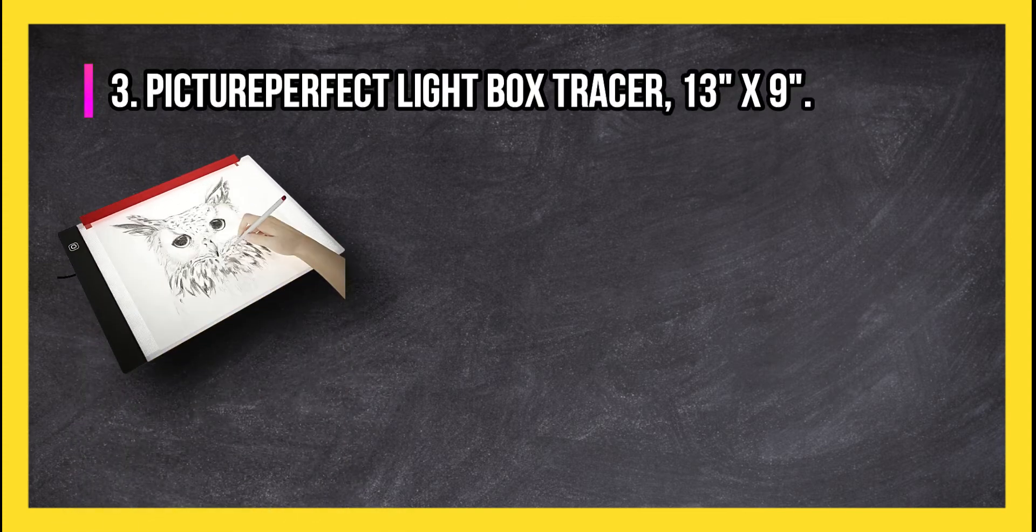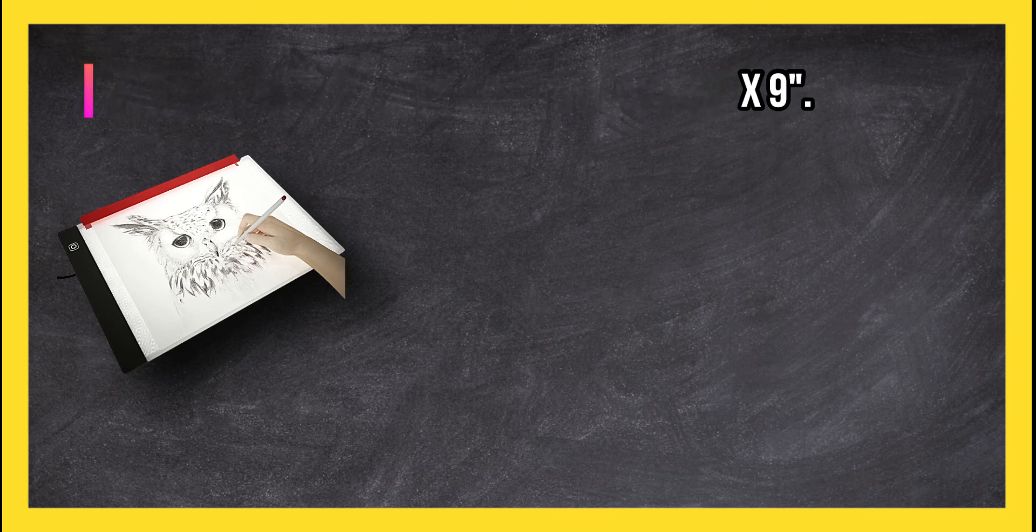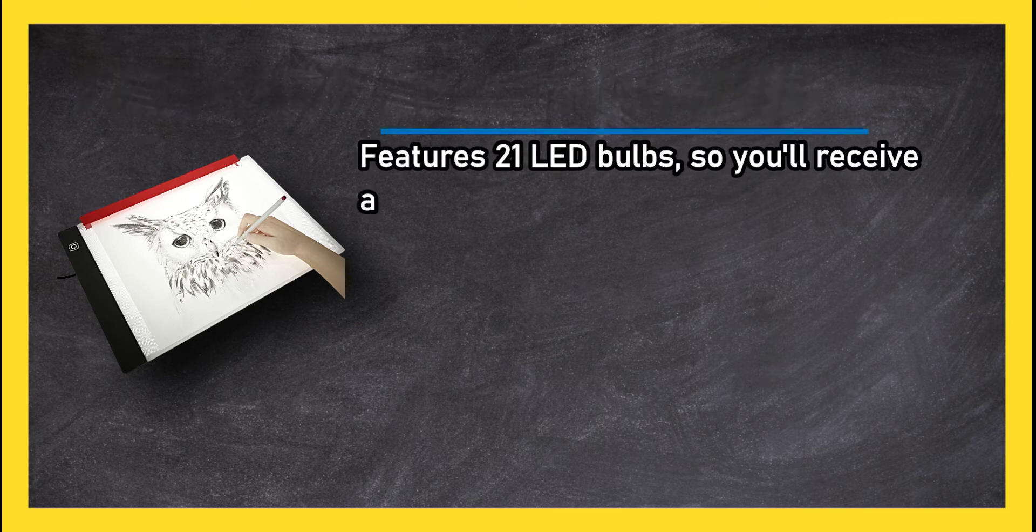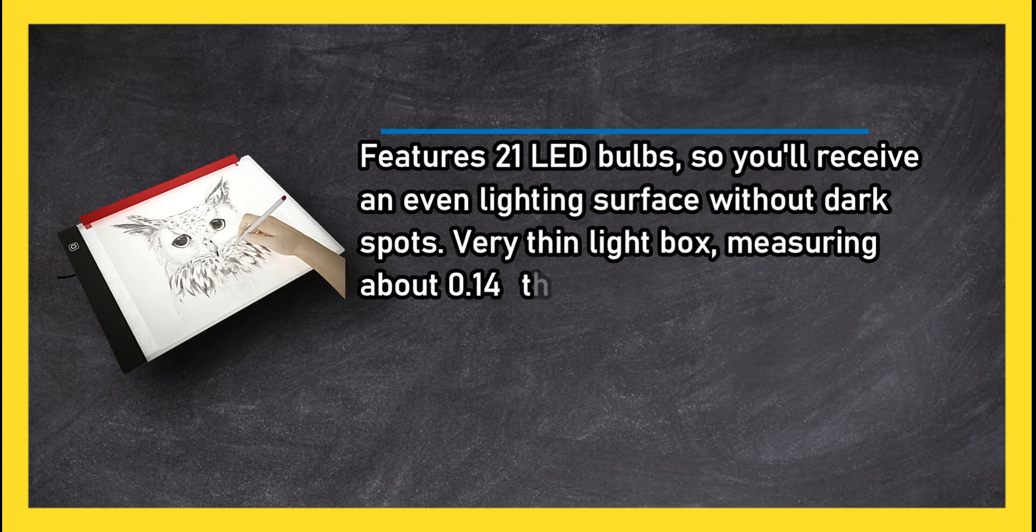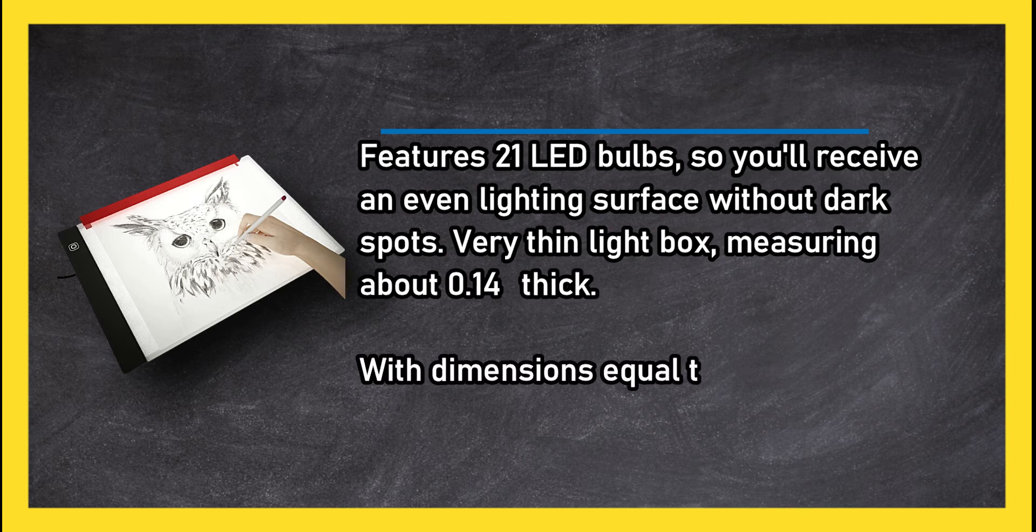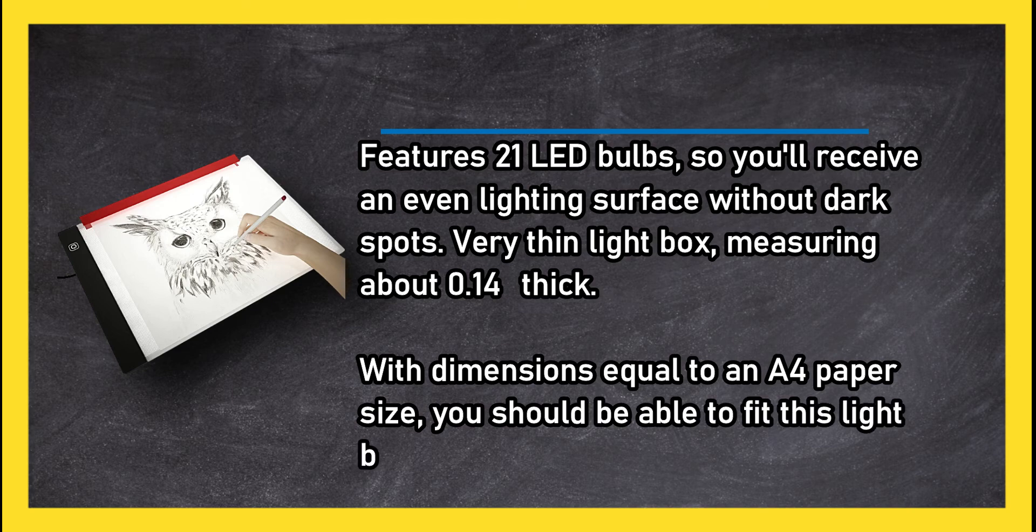PicturePerfect Light Box Tracer, 13 inches by 9 inches. Features 21 LED bulbs, so you'll receive an even lighting surface without dark spots. Very thin light box, measuring about 0.14 inches thick, with dimensions equal to an A4 paper size. You should be able to fit this light box into a backpack for portability. Includes USB cable for power. Great